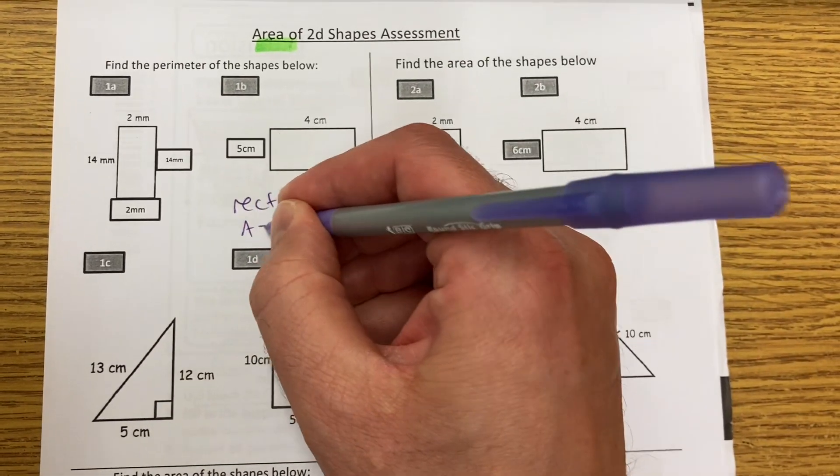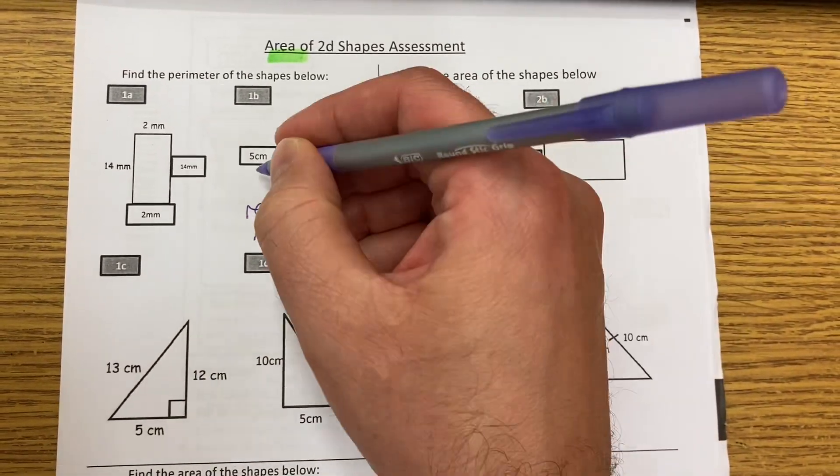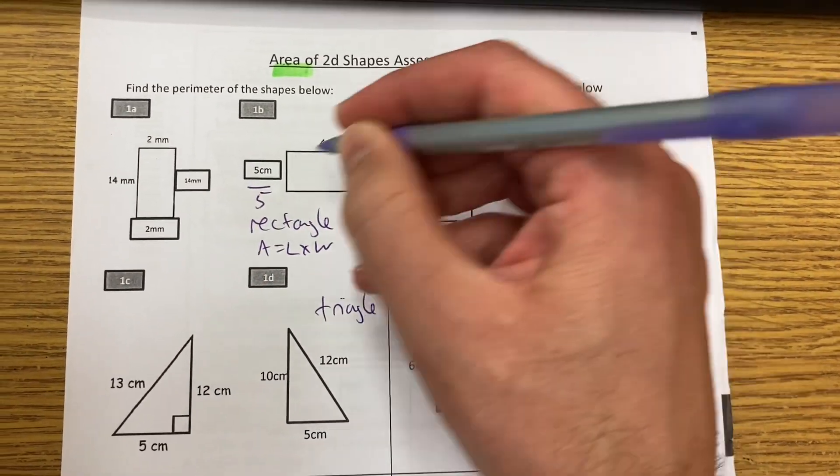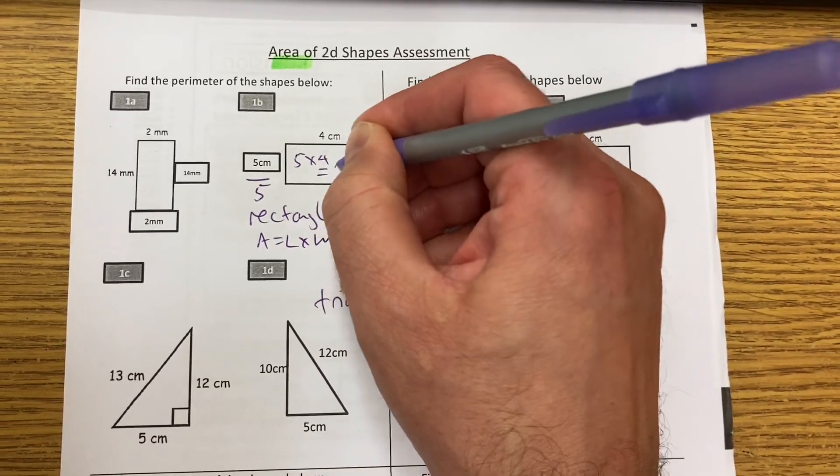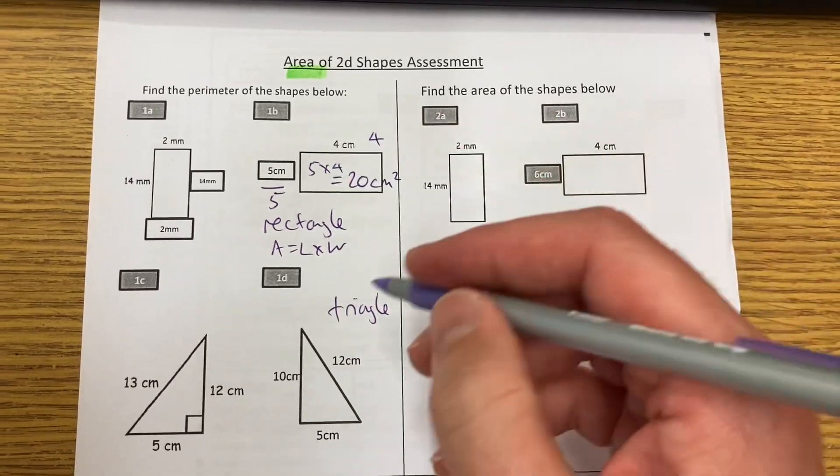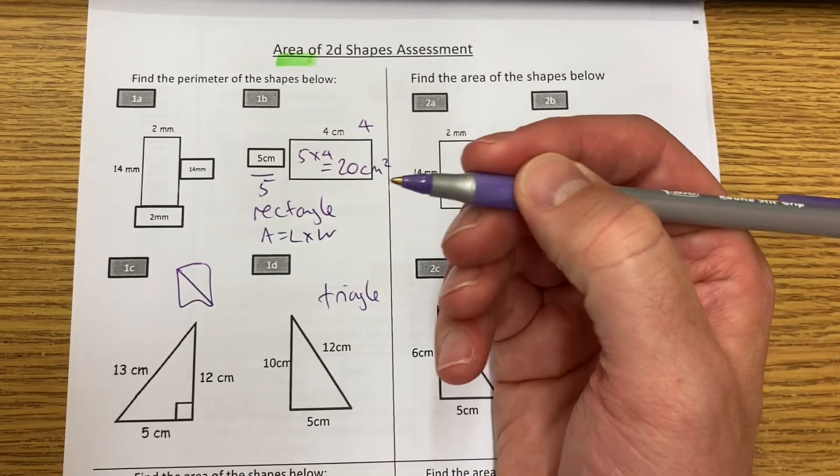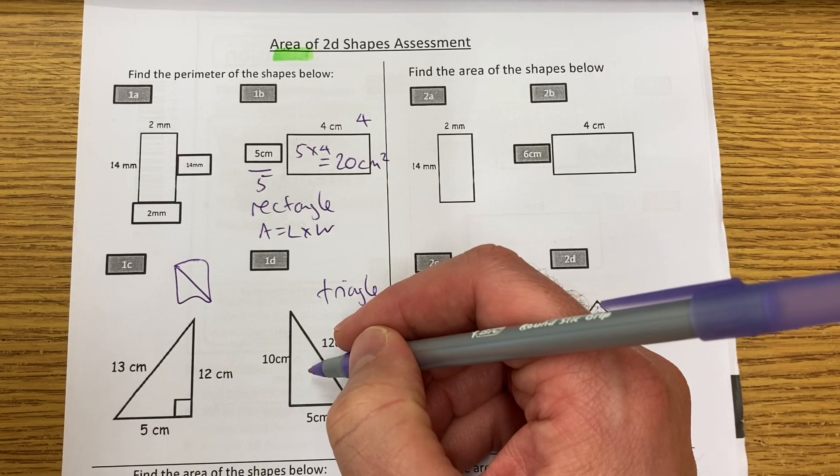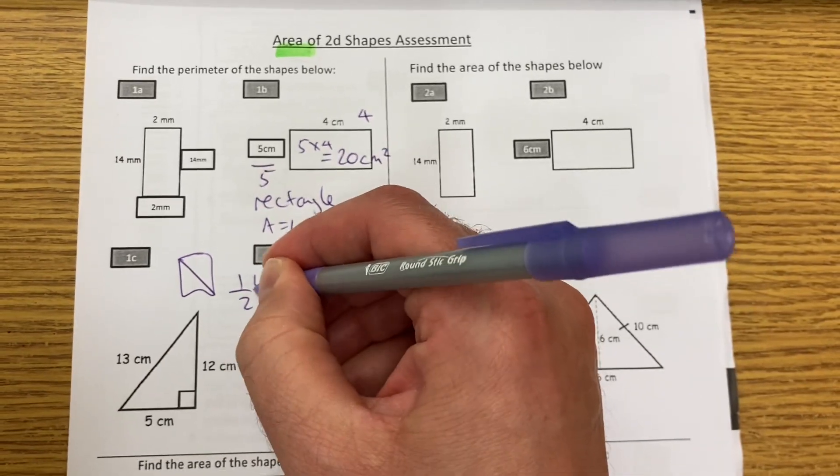Start with rectangles. Area is simply length times width. 5 times 4 is 20. Don't forget the units. For a triangle, it's just half of that. Remember, any square or rectangle divided by 2 would give us a triangle. So we're just going to do half the base times the height.